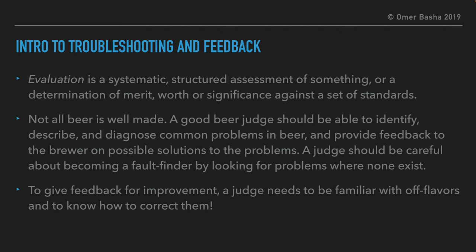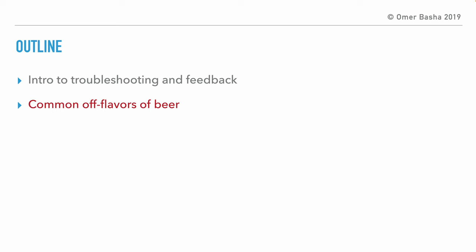But a judge should be careful not to become a fault finder and look for faults and problems where there are none. To be able to give feedback for improvement, a judge needs to understand and be able to detect the possible off flavors and know how to fix them. We saw that part of a complete beer evaluation is to give feedback to the brewers about how they can improve their beer. Now we will discuss flavors and off flavors that can appear in beer and how the brewer can affect them. This presentation is very important for the feedback competency that is worth 20 points in the beer tasting exam.